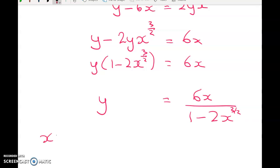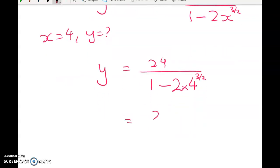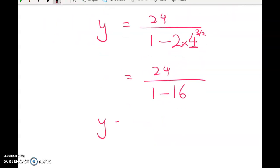Finally, we're ready to figure out when X equals 4, what's Y. So, Y will equal 24 over 1 minus 2 times 4 to the power of 3 over 2. So, that's 24 over 1 minus, so 4 cubed is 64, the square root of 64 is 8, so it's 1 minus 16, giving me Y is equal to negative 24 over 15, which is negative 8 fifths, or the rather boring number of Y equals negative 1.6. So, there you go.